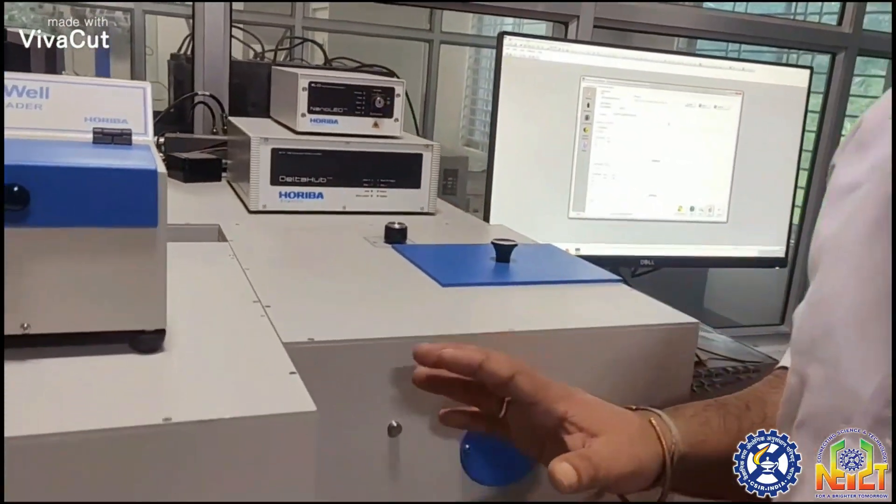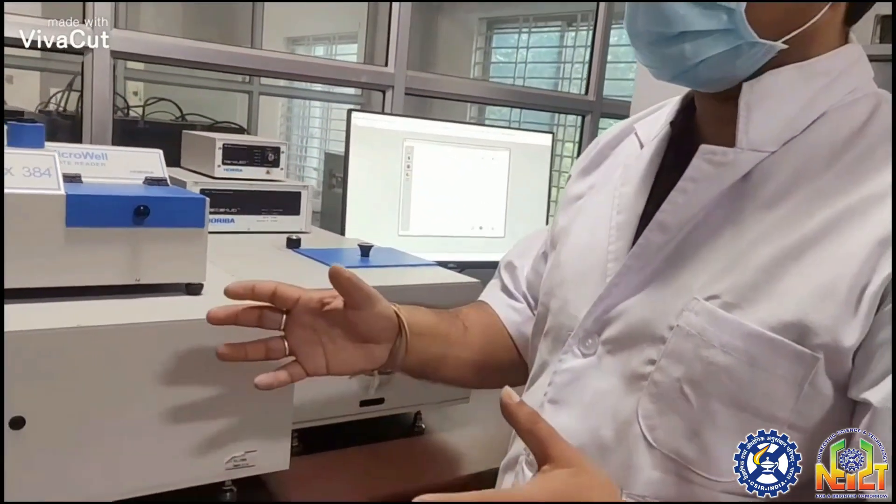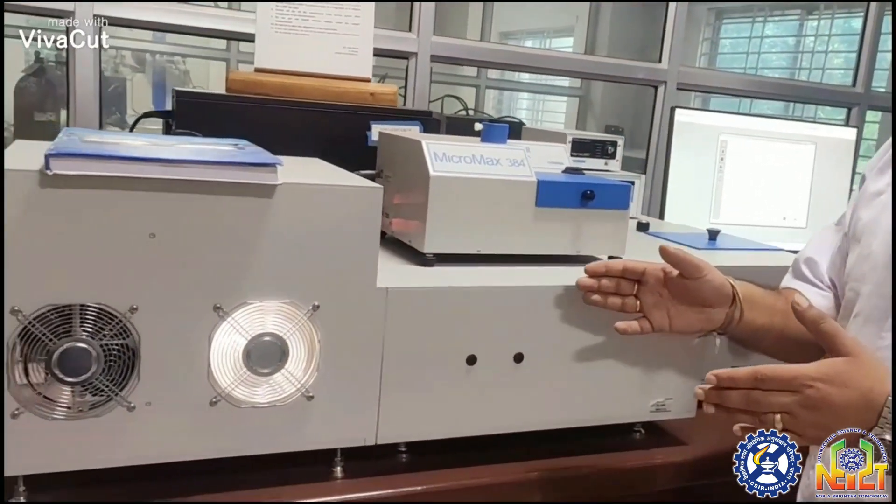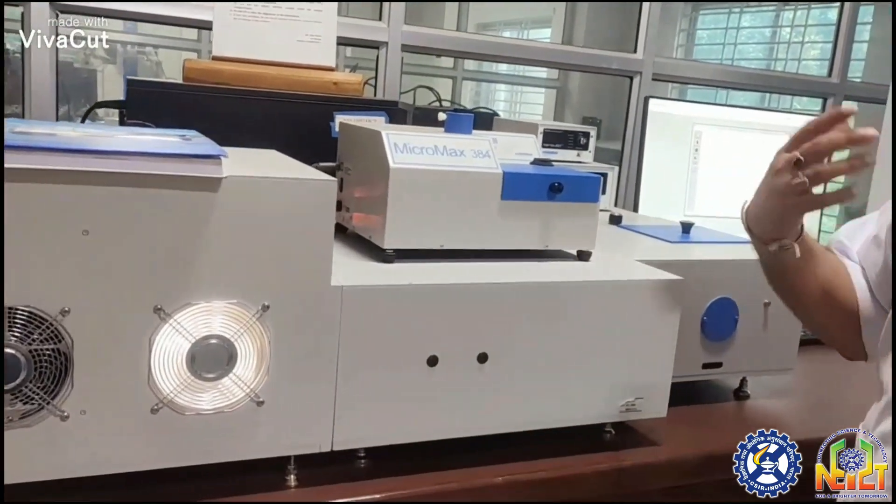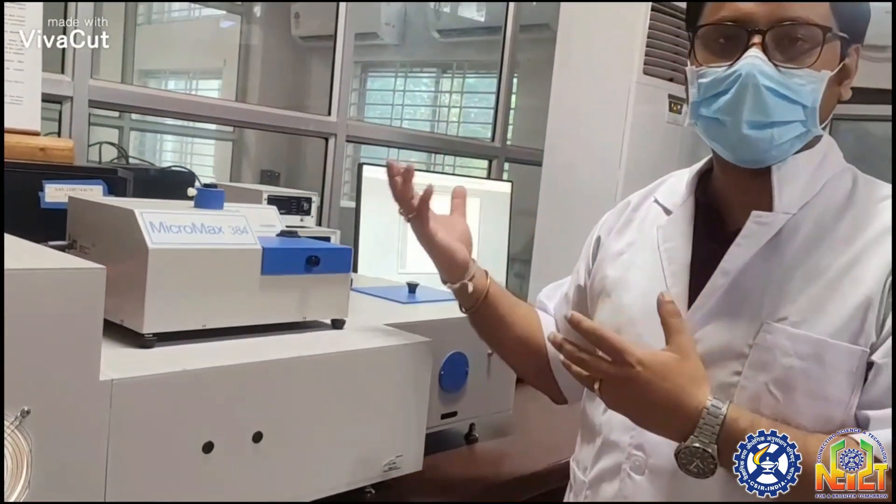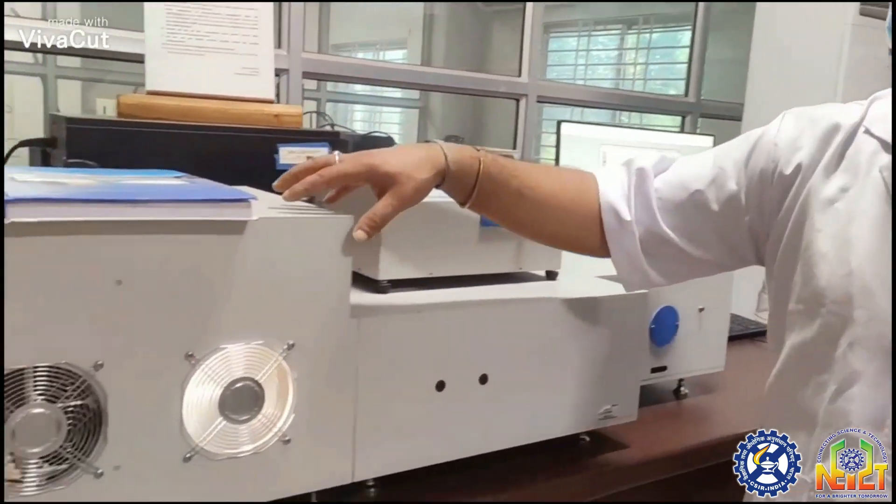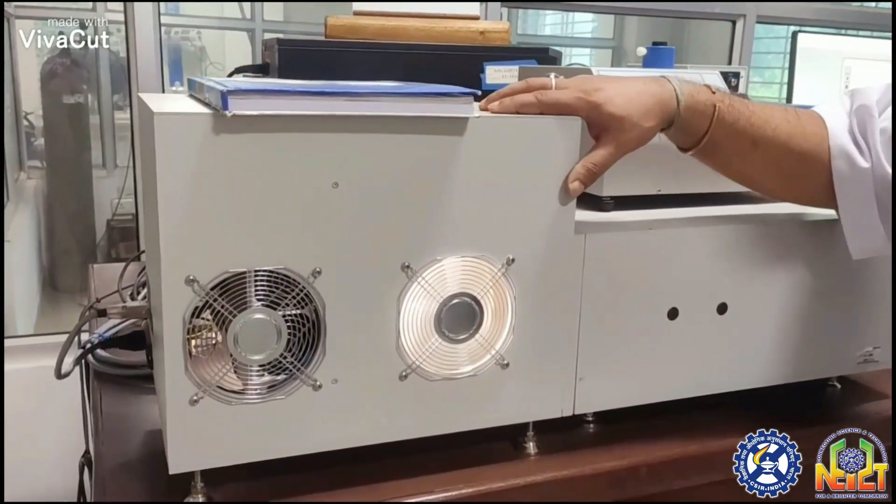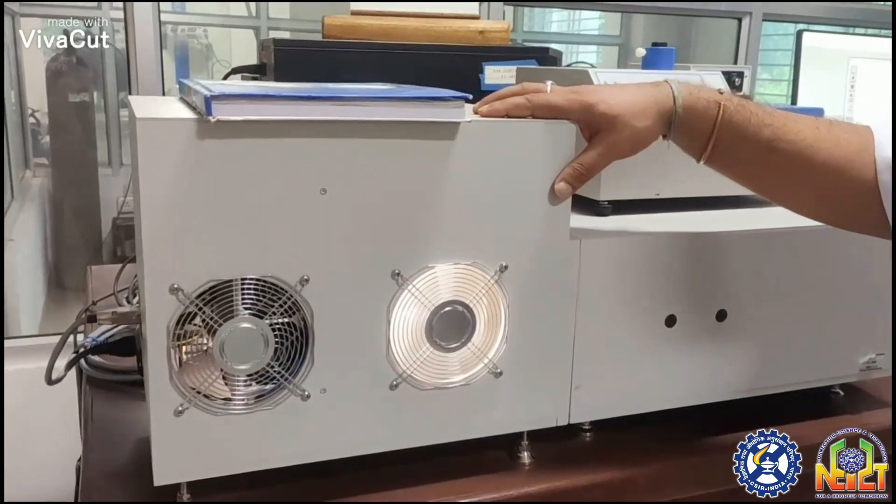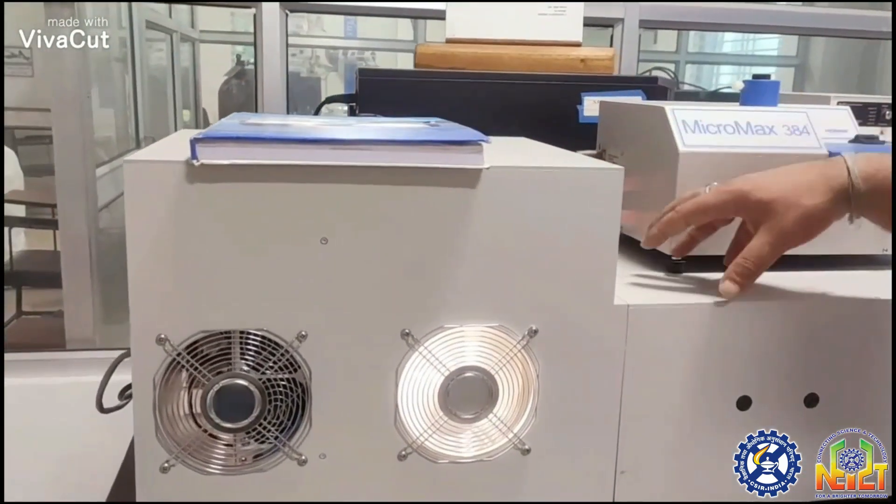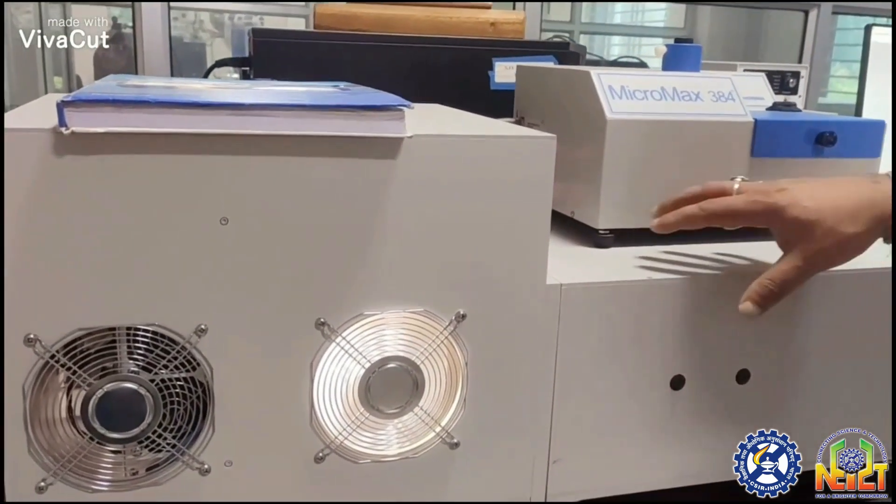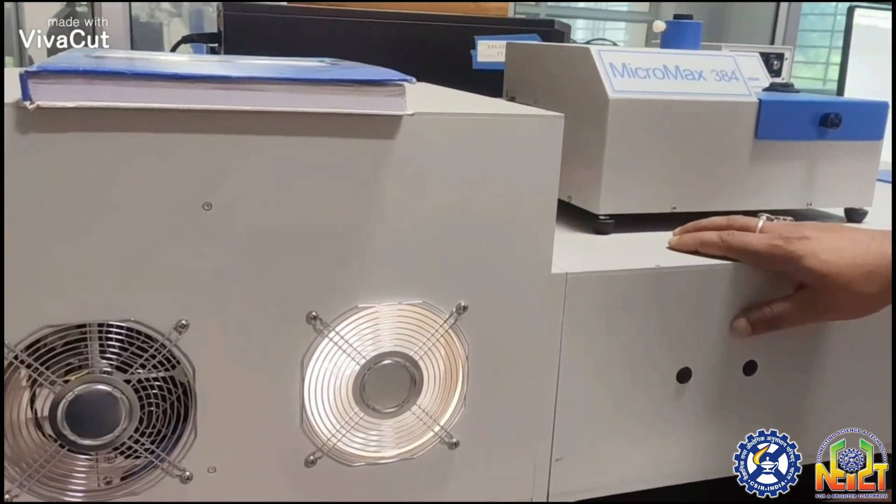In the Fluorolog3 spectrophotometer, the sample is excited by a single wavelength, then we analyze the emission at the output. The light source is a xenon lamp which is a broadband source. The broadband light is converted into monochromatic light using the excitation monochromator.